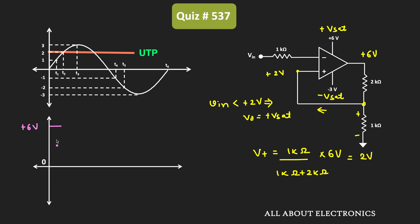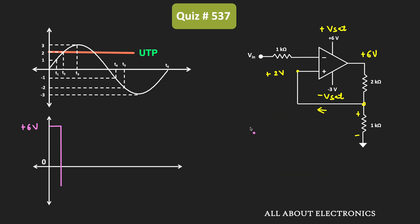After t2, when Vin exceeds V+ (i.e., +2V), the output of this op-amp switches to -Vsat, which is -3V. Let's now determine how long the output will remain at -3V.